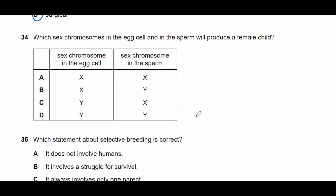Question thirty-four: which sex chromosomes in the egg cell and sperm will produce a female child? The egg cell only carries an X chromosome. The sperm can carry either X or Y. To produce a female child you need XX. Therefore the answer is A.